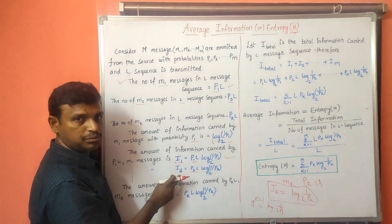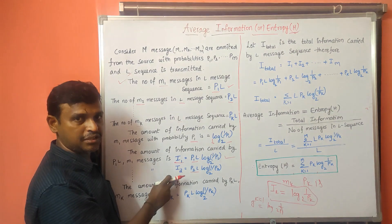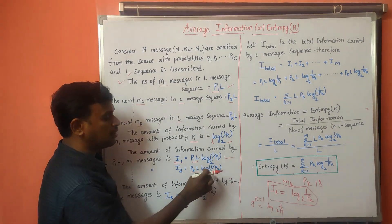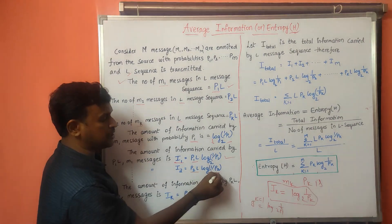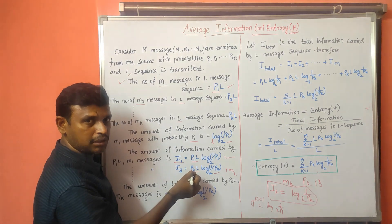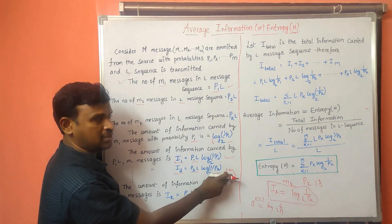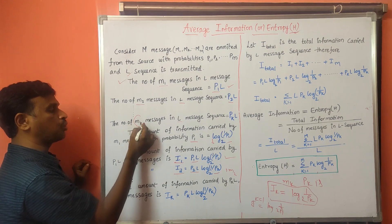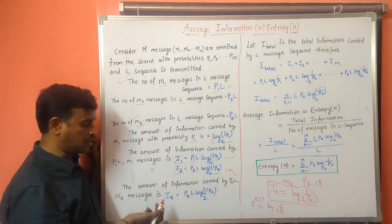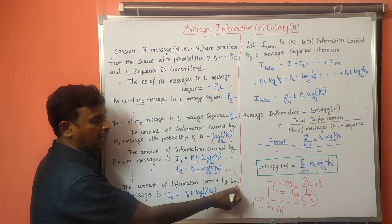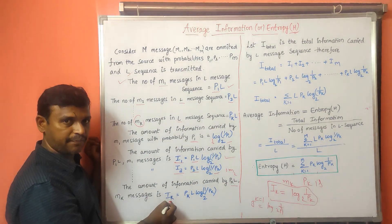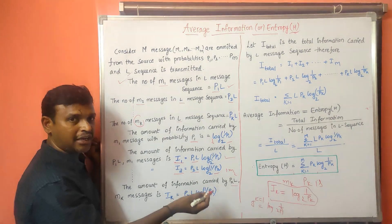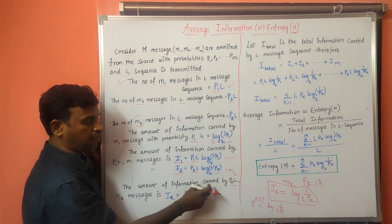Similarly, the total information carried by m2 messages, i2, is: the total number of m2 messages is p2 into L, and each m2 message carries log of 1 by p2 to the base 2. So total i2 equals p2·L multiplied with log of 1 by p2 to the base 2. Likewise, the total information carried by pk·L number of mk messages is ik equals pk·L multiplied with log of 1 by pk to the base 2.